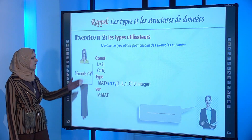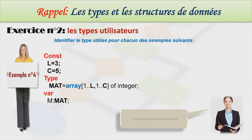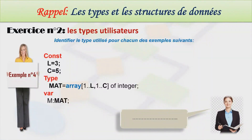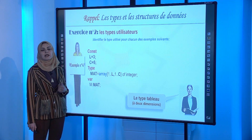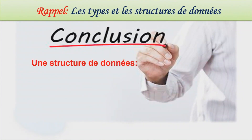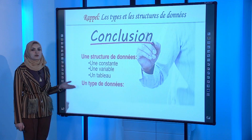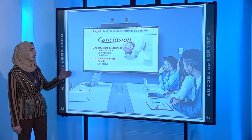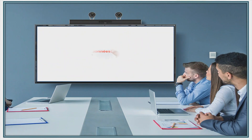Dans le quatrième exemple, le type mat est un array défini par deux dimensions [1..L, 1..C] of integer, avec les constantes L=3 et C=5. On utilise à nouveau le mot-clé array, mais c'est un tableau bidimensionnel, à deux dimensions. En conclusion, une structure de données — constante, variable de type simple ou tableau — permet de sauvegarder une ou plusieurs données de type standard ou utilisateur.